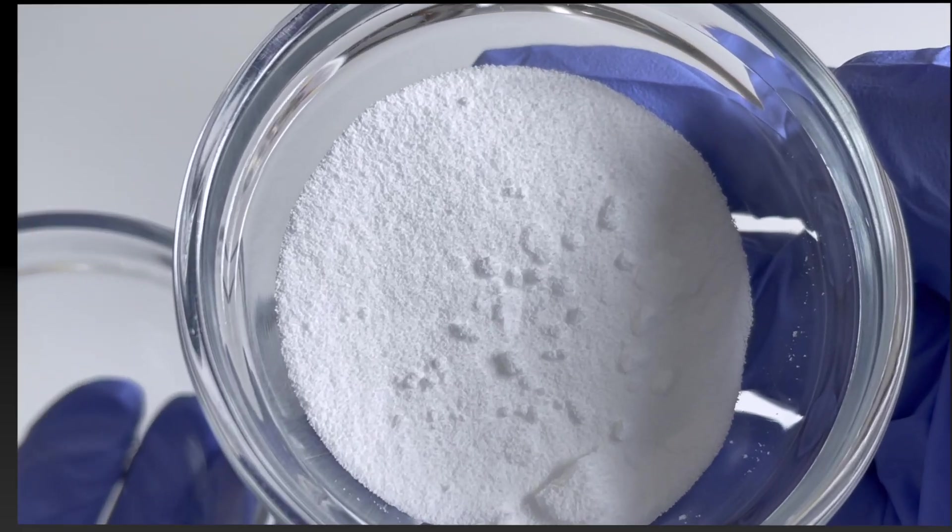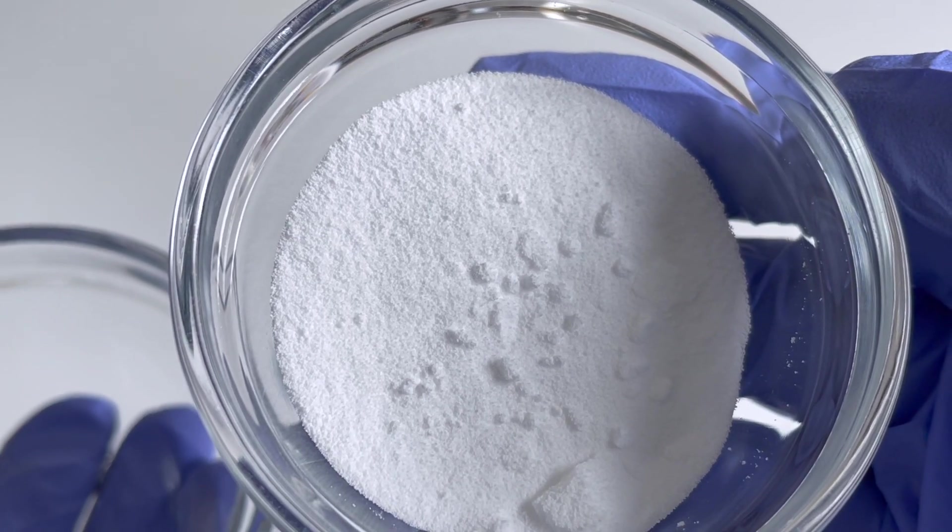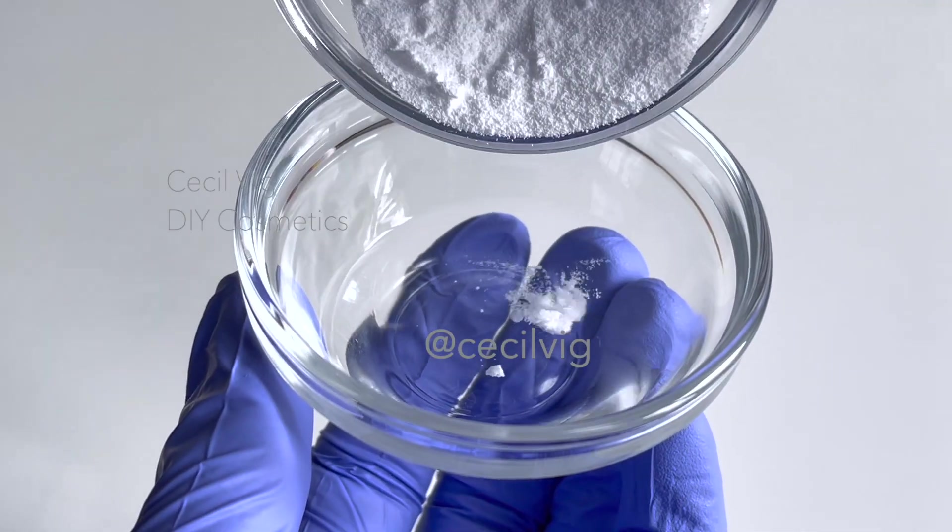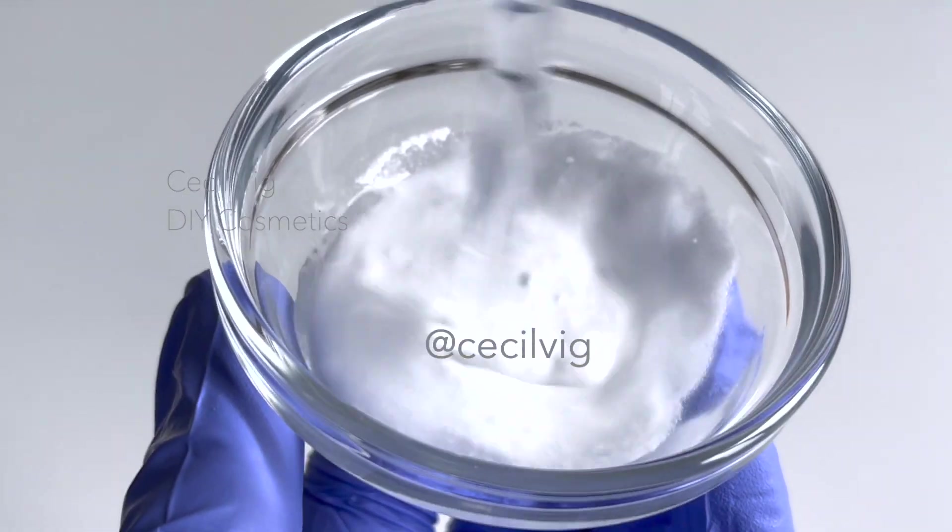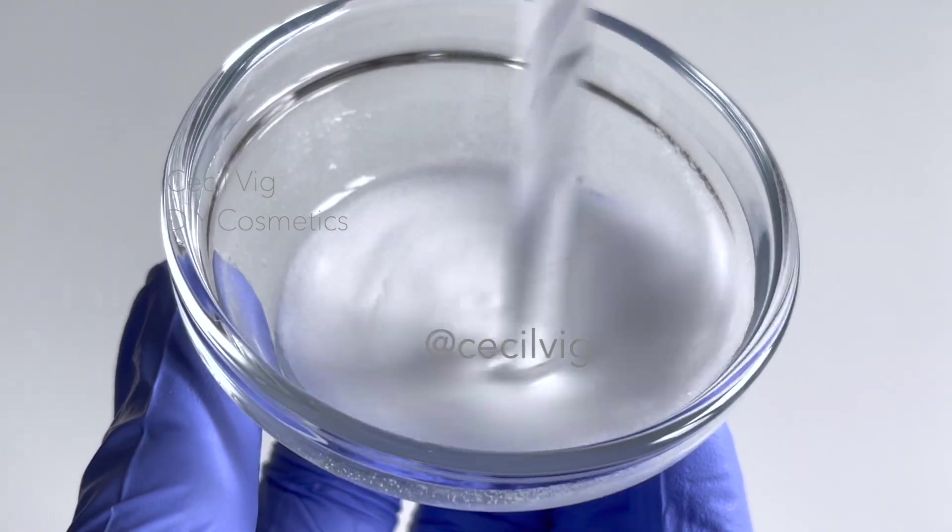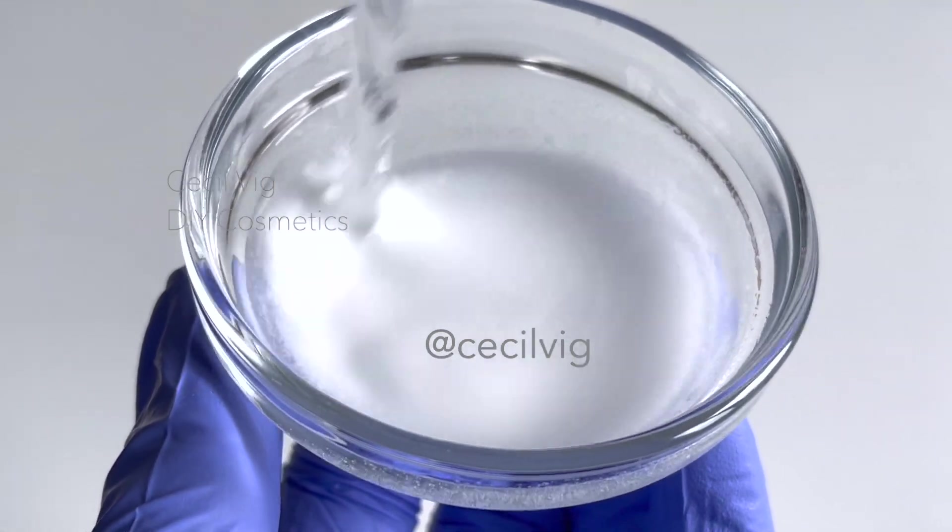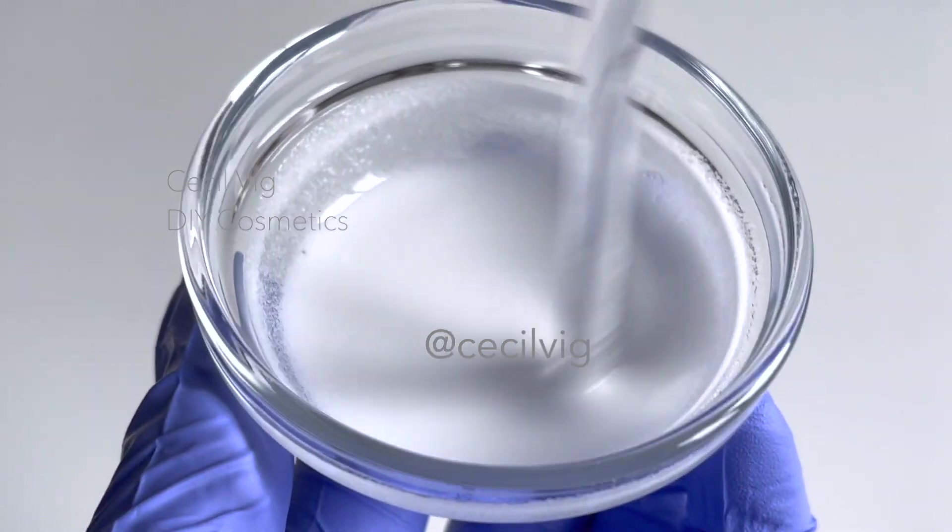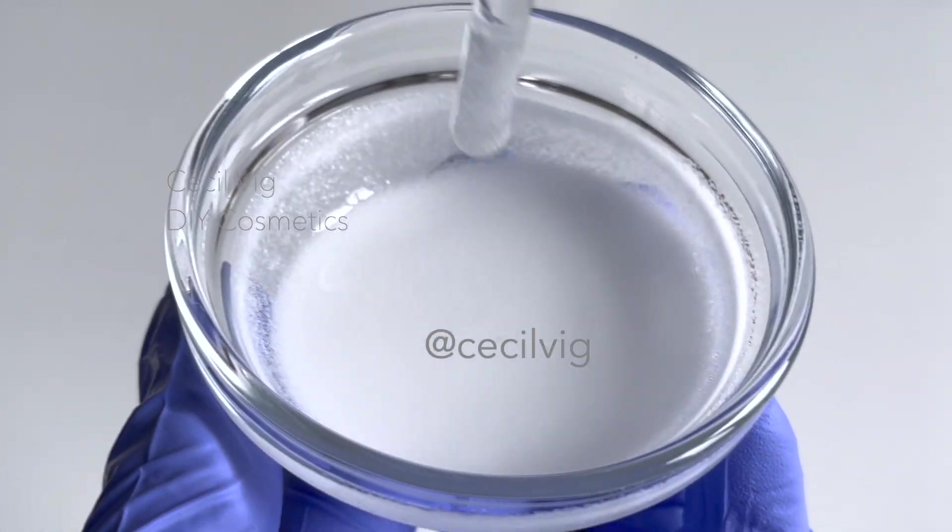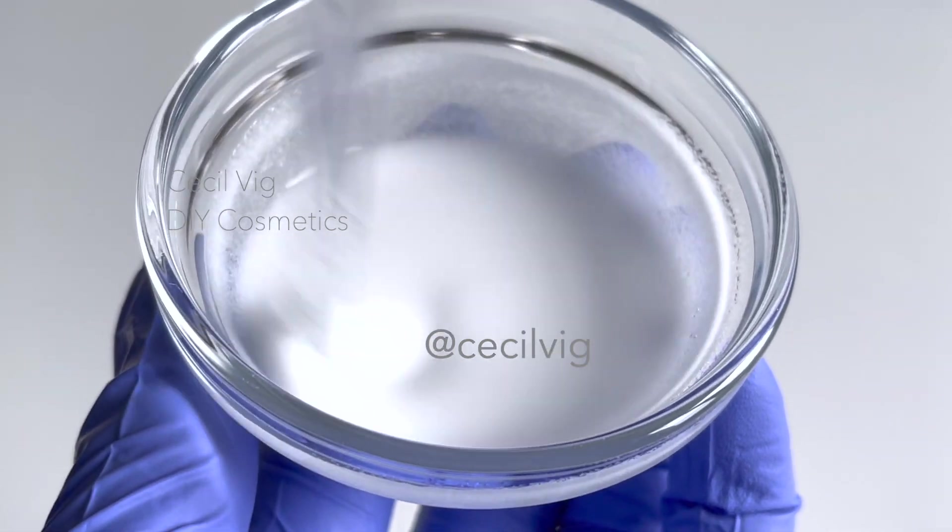While waiting for the water and oil phase to get ready, I prepare my active ingredients. I add the niacinamide to the water and mix well. Niacinamide is a powdered form of vitamin B3. It is a safe and non-irritating cosmeceutical ingredient. It improves skin texture and the appearance of hyperpigmented spots.